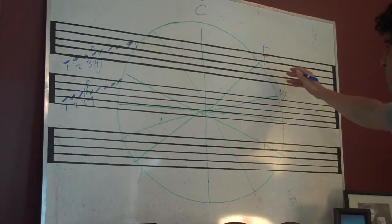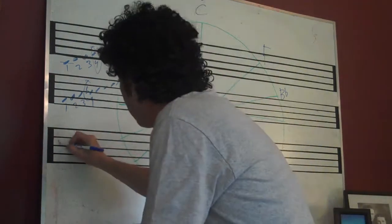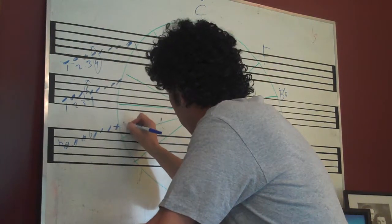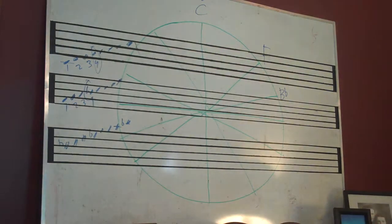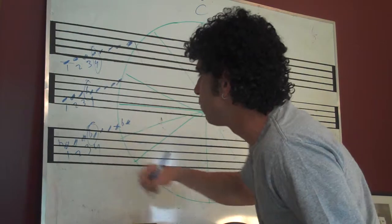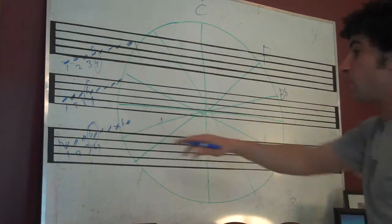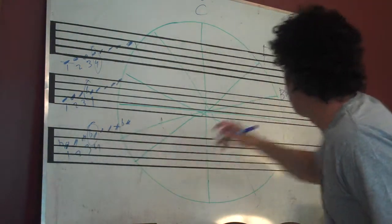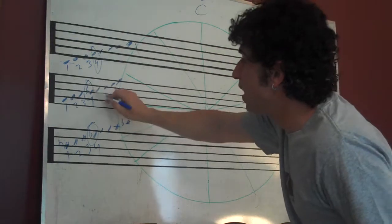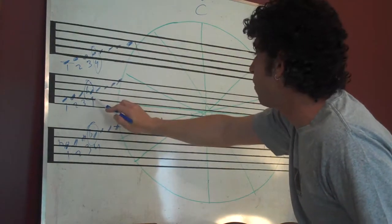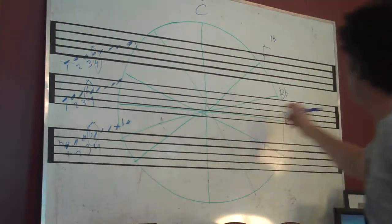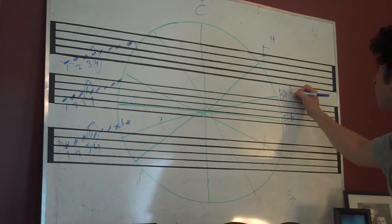If you were to write out B flat major scale: B flat, C, D, E flat, F, G, A, B flat. Fourth note of B flat major scale is E flat, one, two, three, and four. So, E flat, the fourth note of B flat major scale, E flat. Oh, I got ahead of myself. How many flats are there in F? One flat, B flat. How many flats are there? There are two. Two flats.